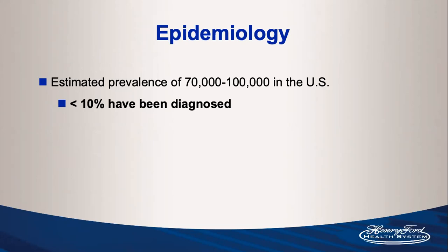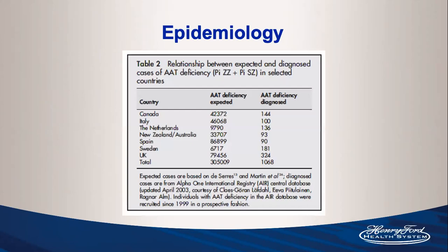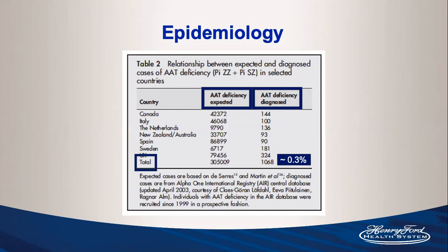It's estimated that less than 10% — and maybe far lower — of those cases have actually been diagnosed. Looking at data from seven countries, comparing expected cases based on allele frequencies versus diagnosed cases in registries, out of more than 300,000 expected cases, approximately 1,000 have been diagnosed, representing around a 0.3% diagnosis rate.